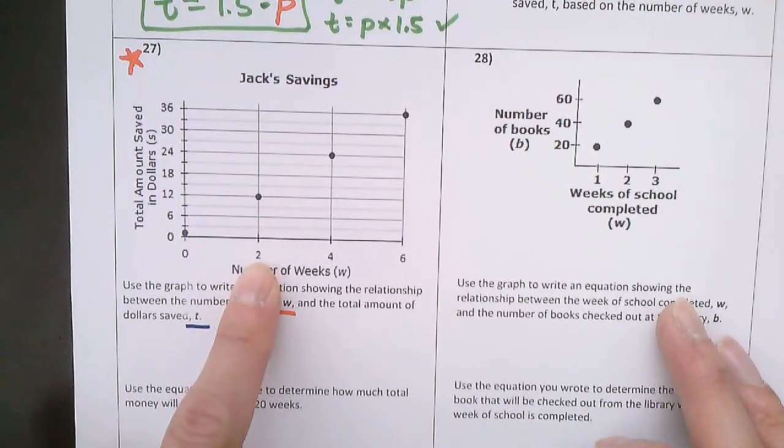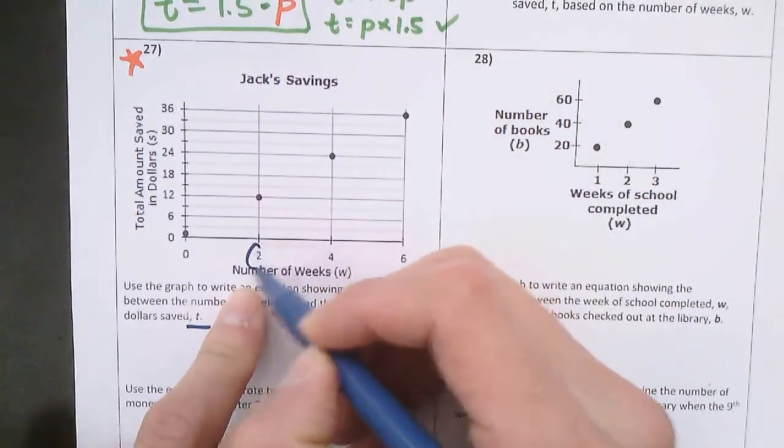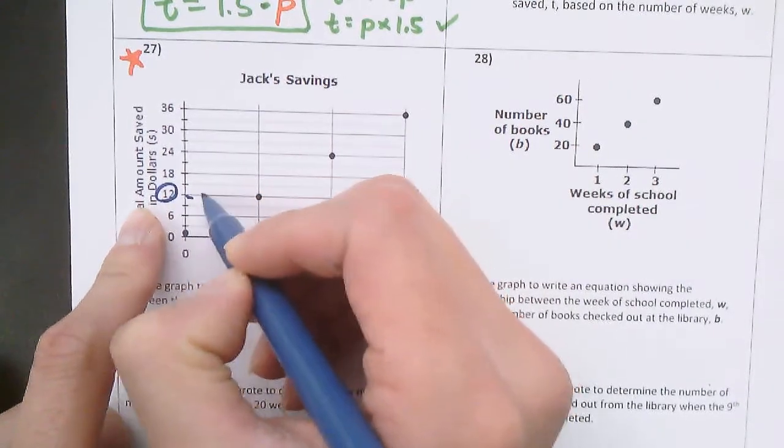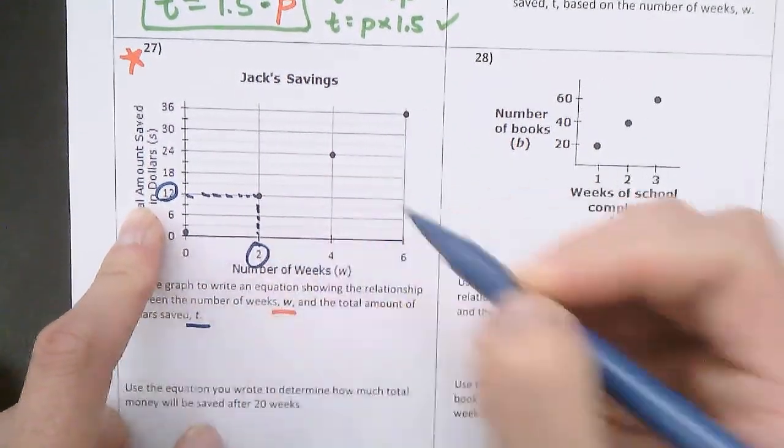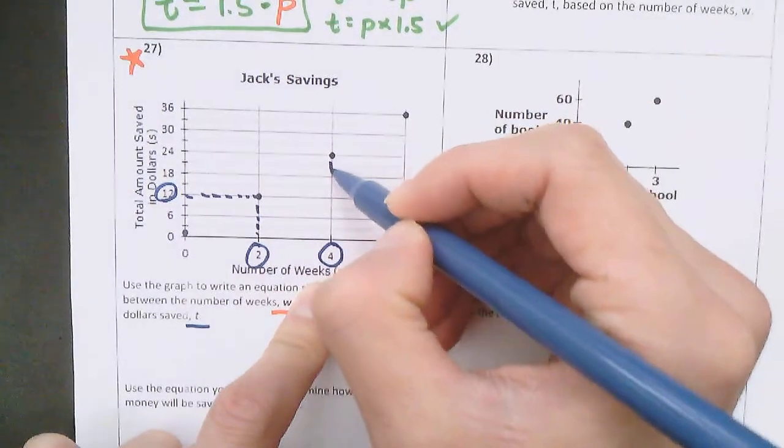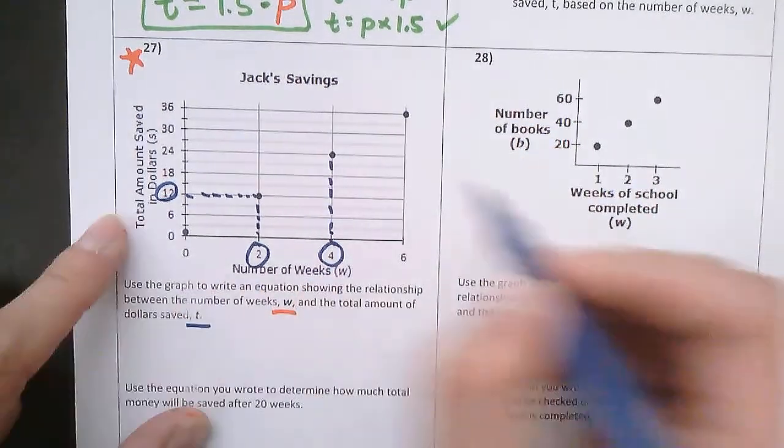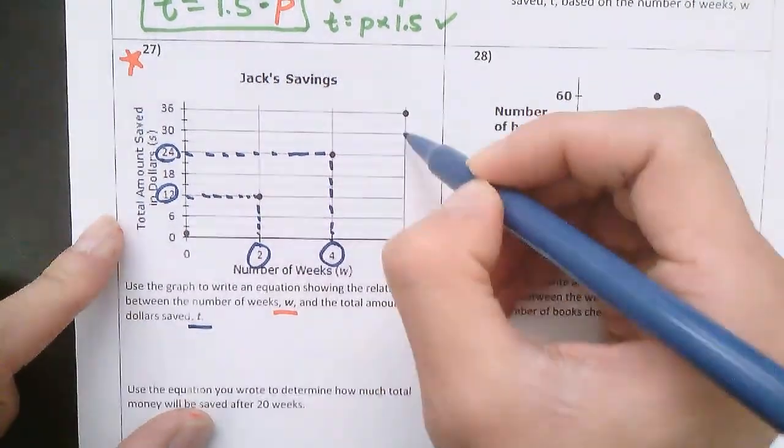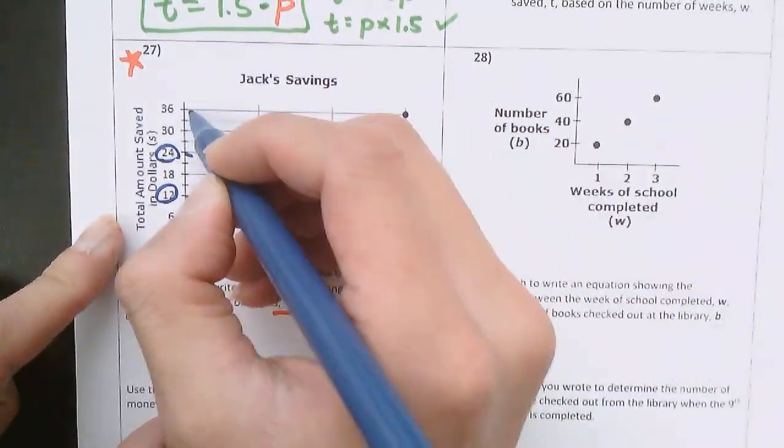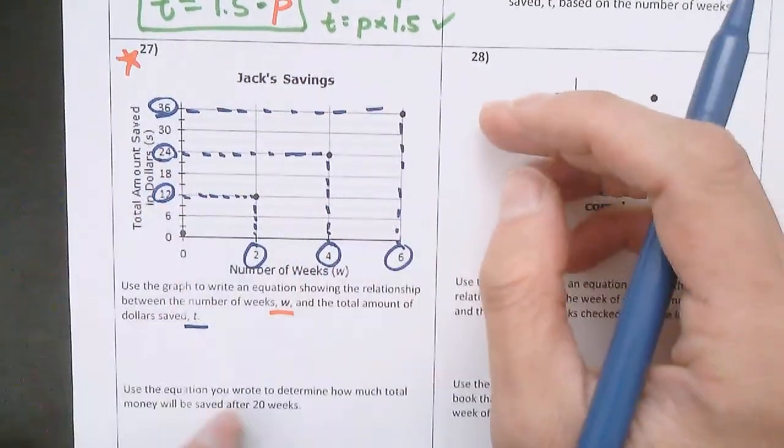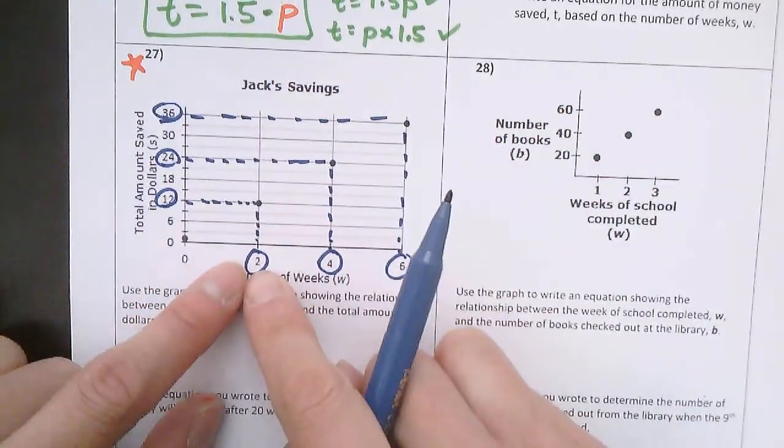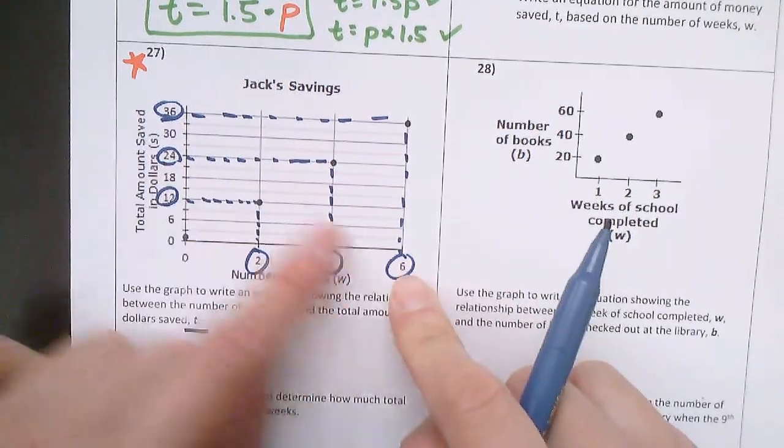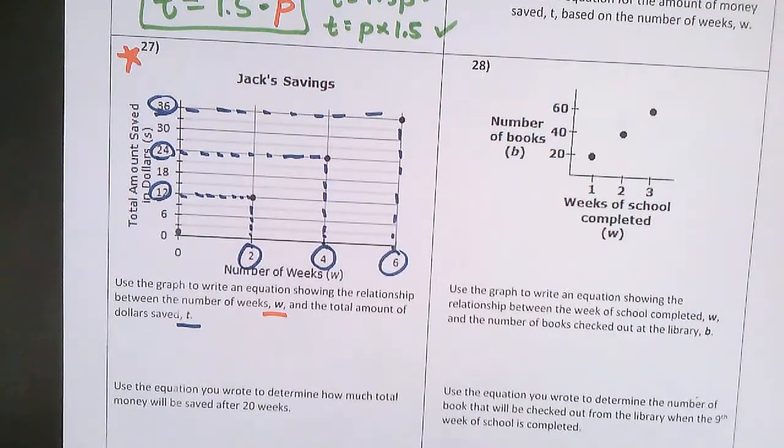Well, when W is 2, after 2 weeks, you save $12. After 4 weeks, you save $24. After 6 weeks, you save $36. So I think to myself, what is the relationship between 2 to 12, and then 4 to 24, and then 6 to 36? What's happening?